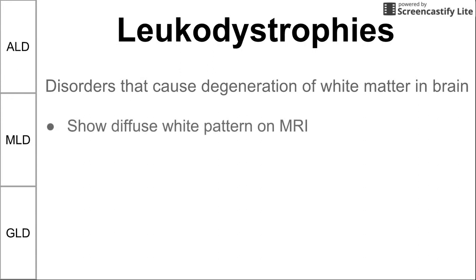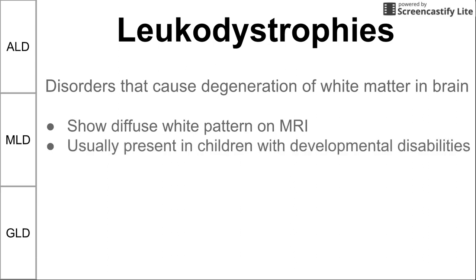A few facts about leukodystrophies before we begin. They show a diffuse white pattern on MRI, as you would expect if the white matter is being damaged. They usually present in children, are associated with genes and proteins, so they're usually hereditary. They present in children as developmental disabilities.